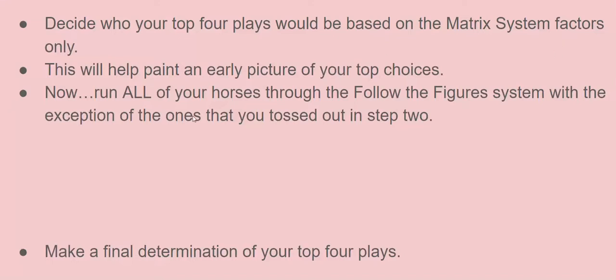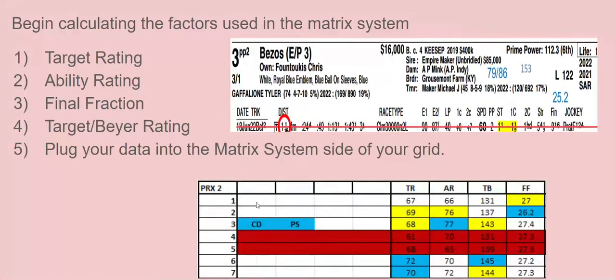Decide who your top four plays will be based on your matrix system factors only. So I'm going to back up again. Based on what I have over here, I have a class drop pace setter, and I mentioned in another video that that right there is an automatic play for me. It's an automatic win play if the odds are there for me, and two, it's definitely going to be in all of my exotics—horizontal and vertical. This three horse would definitely be in all of my plays. Maybe keyed in a trifecta on top so I can use multiple horses on the second and third. It may be a single in a pick three, pick four, pick five, and so forth.